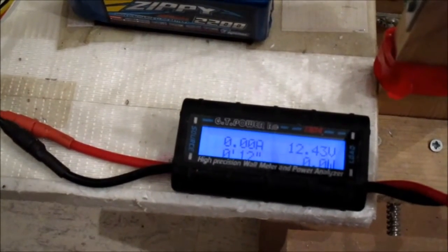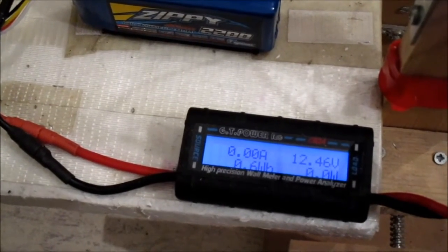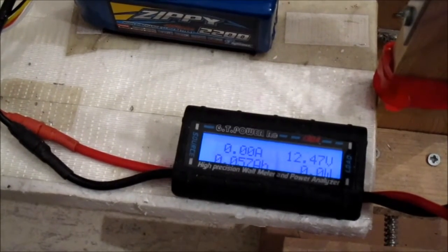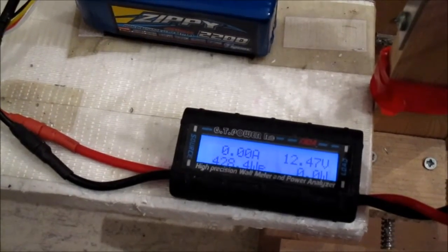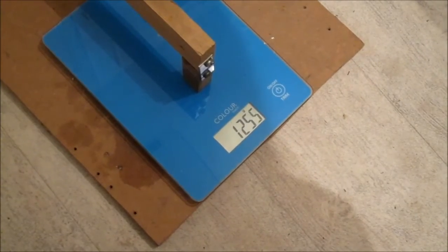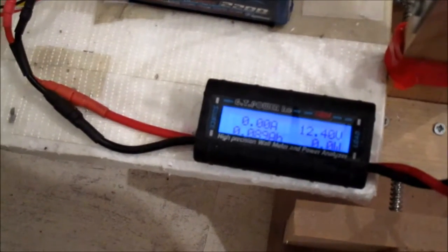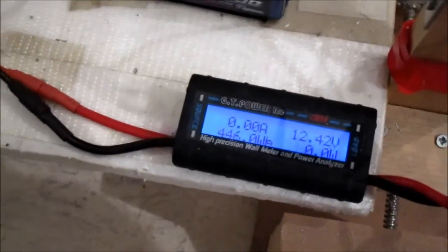About 1250 grams of thrust. Let's see what we get on the wattmeter. 11.3 on the volts, 36.9 amps, 428 watts. Let's try that on the burst again, 446 watts, 37.7 amps. That's pretty good.